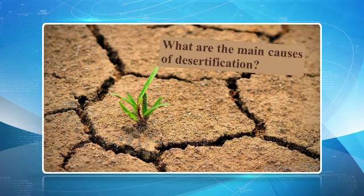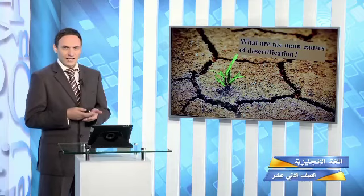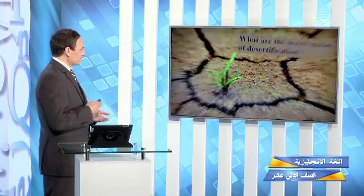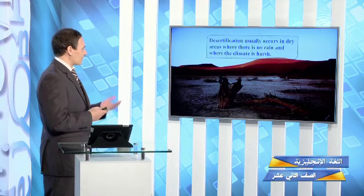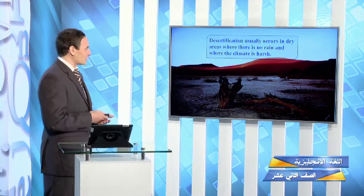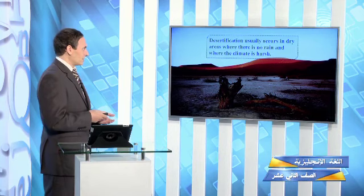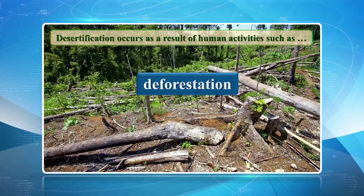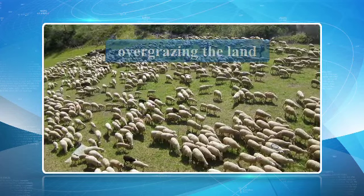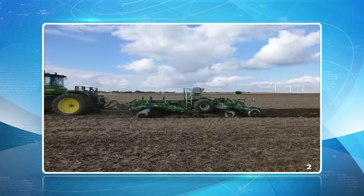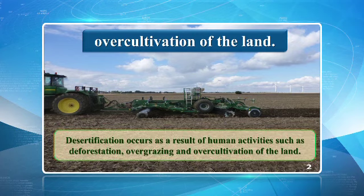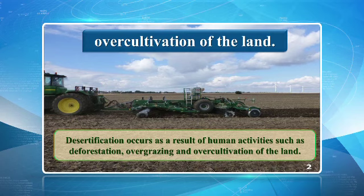Another question: what are the main causes of desertification? Remember, desertification means the process by which fertile land becomes desert. Some of the causes: desertification usually occurs in dry areas where there is no rain and where the climate is harsh. It also occurs as a result of human activities such as deforestation — cutting down trees at a global scale — overgrazing the land, or over-cultivation. A complete answer: 'Desertification occurs as a result of human activities such as deforestation, overgrazing, and over-cultivation, as well as harsh climate.'